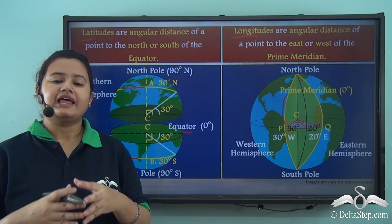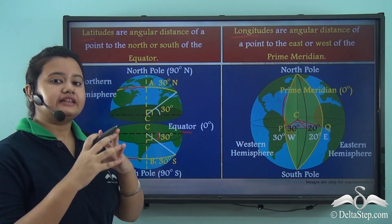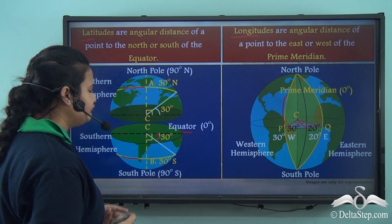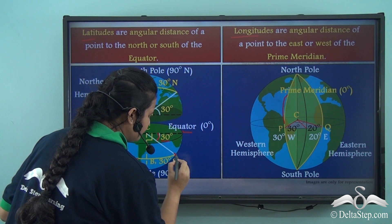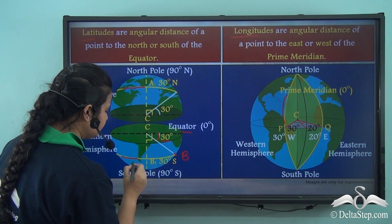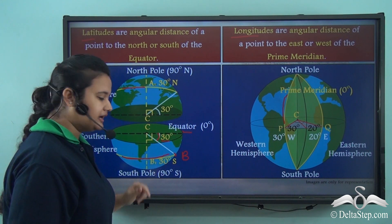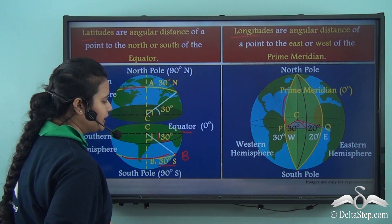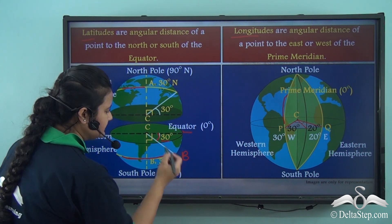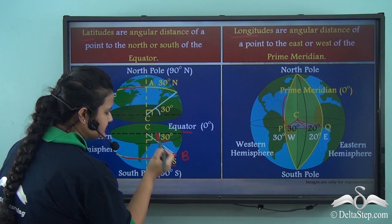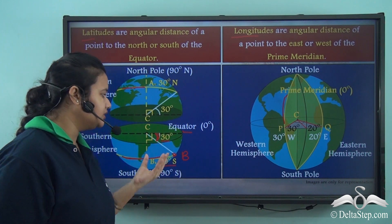Now, latitudes represent the angular distance of a point. That is to say, if this angular distance is 30 degrees and here we have a point B, then the latitude passing through point B will be marked as 30 degrees south, because this point lies to the south of the equator and the angular distance is 30 degrees. So latitudes represent angular distance.